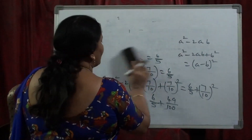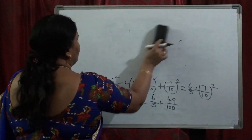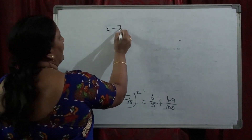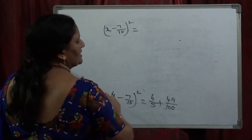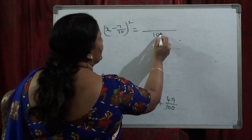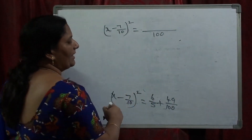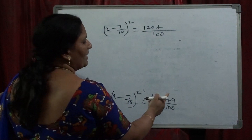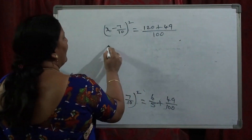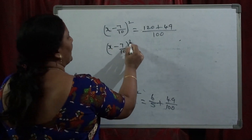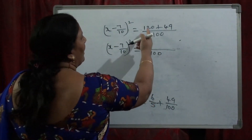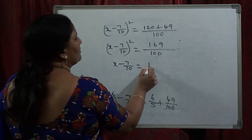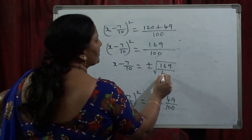Now simplify this expression. Then (x − 7/10)² equals — taking LCM in RHS, 100 is LCM. 5 goes into 100 twenty times; 20 × 6 = 120. Plus, 100 goes into 100 one time; 1 × 49 = 49. So (x − 7/10)² = (120 + 49)/100 = 169/100. Therefore, x − 7/10 = ±√(169/100) = ±13/10.